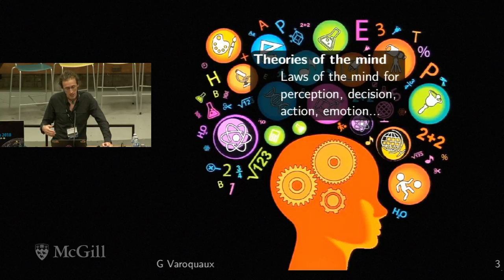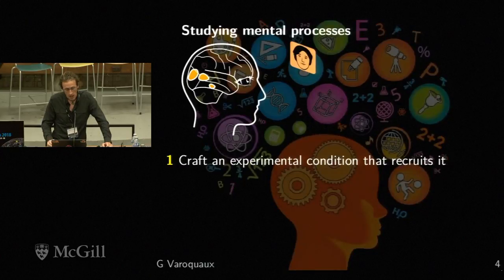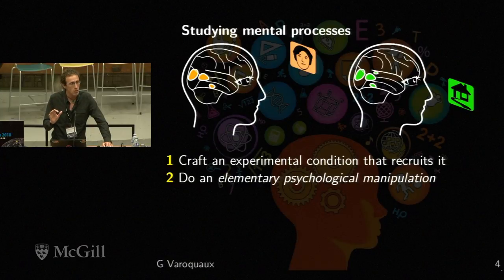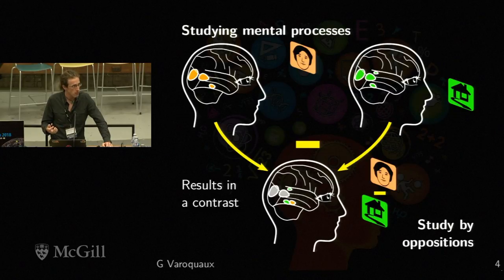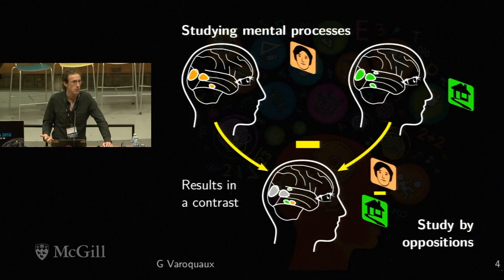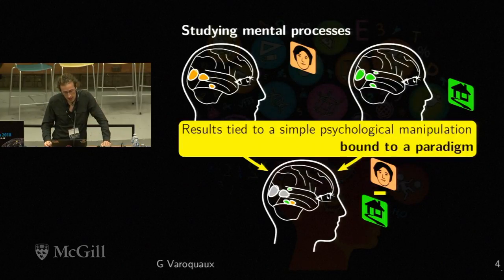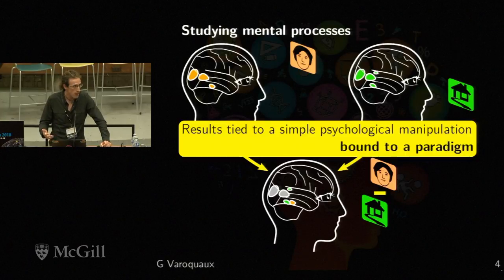What I call the theory of the mind is basically laws for perceptions, decision, action, emotion — basically for the cognitive functions. If we think about how we typically study mental processes, we craft an experimental condition that recruits a given mental process, do some form of elementary psychological manipulation, and then most likely contrast those. This tells us we typically study mental processes via oppositions, and I find that this is a very strong reductionism and a limiting factor. To interpret the results, we're bound to a paradigm — sometimes a conceptual paradigm — and this is a real challenge.